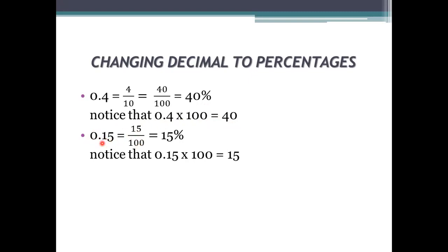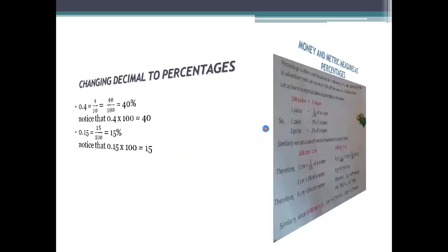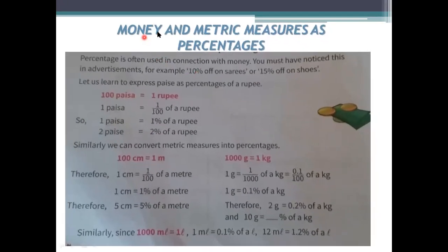For 0.15: after the decimal point, if there is one decimal digit, it is by 10; if there are two decimal digits, it is by 100; if three, it is by 1000. So 0.15 has two decimal places, meaning 15 by 100, which is 15 percent. So 0.15 times 100 gives 15. This is how you change decimals to percentages.